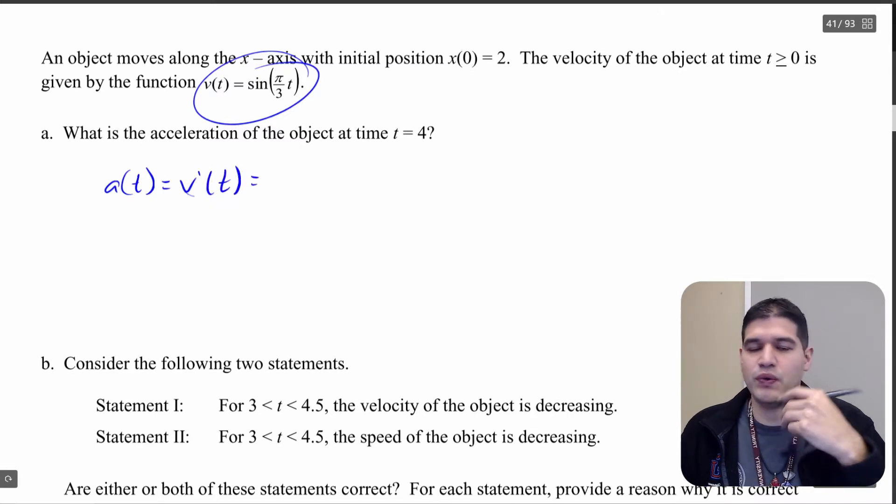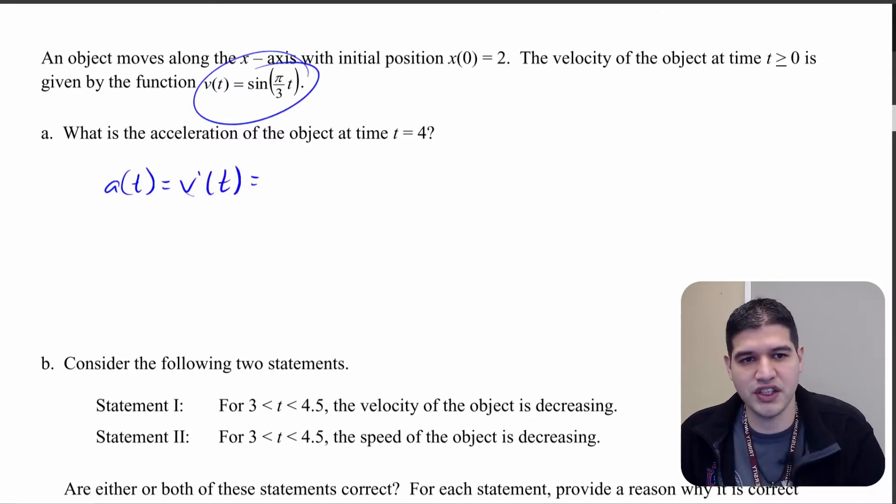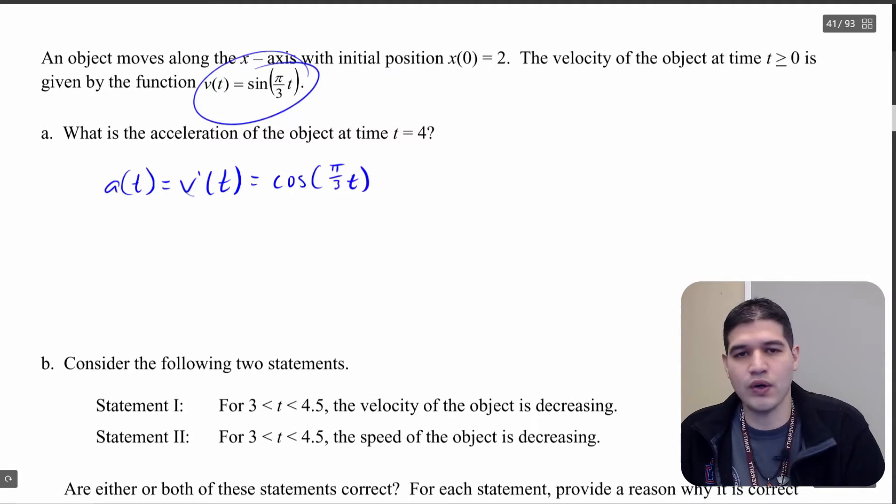So how are we going to get v prime of t? Well that's just going to be the derivative of this function. So the derivative of sine is going to be cosine of pi over 3t, and then we have the chain rule that we're going to be using here. So we're going to multiply this by the derivative of pi over 3t, which is times pi over 3.